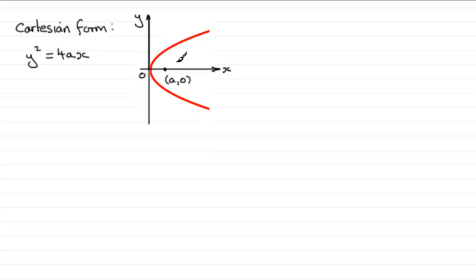Now what I want to look at in this video is another form of the equation of a parabola, the parametric form. With the parametric form, the x-coordinate is always equal to at squared and the y-coordinate is always equal to 2at. So any point on here is given with coordinates (at², 2at).